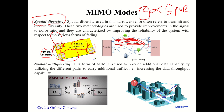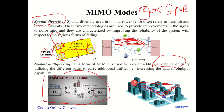In spatial multiplexing, MIMO has multiple paths — a direct path and multipath components. These multiple paths are used effectively so that different data streams are sent on different paths simultaneously, increasing total data capacity. As shown in the animation, one data stream goes via one path and another data stream via another path, enhancing capacity.